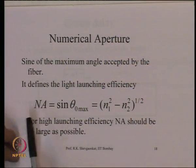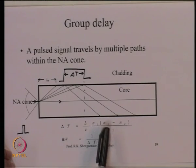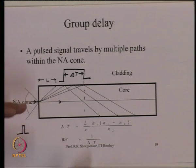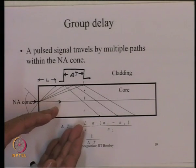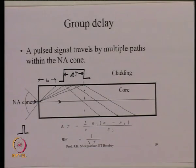Now we have contradictory requirements: for high numerical aperture (light launching efficiency), we want (n1 − n2) as large as possible, but for high bandwidth, we want (n1 − n2) as small as possible. The answer lies in the application for which the optical fiber is being used.